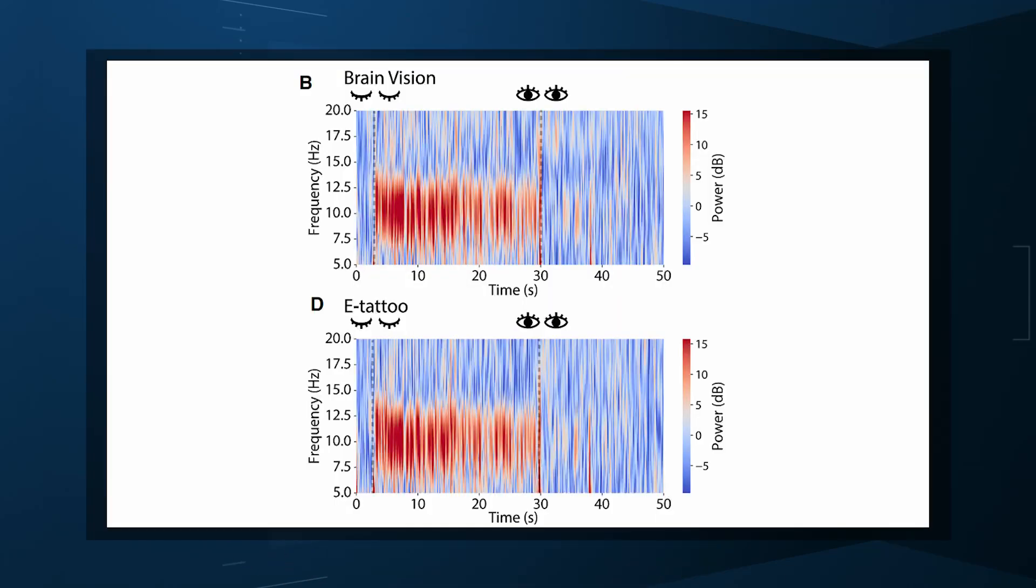The first thing to test was whether the device could perform as well as an EEG on a simple task. Six adults were recruited and wore the tattoo at the same time as a conventional EEG. They were then asked to open and close their eyes. There's a standard finding here that with eyes closed, alpha frequencies, mid-range brain oscillations dominate. And you can see the patterns recorded by the standard EEG and the new tattoo system here. They're basically indistinguishable. But the tattoo system, with its flexible design, offers some particular advantages.